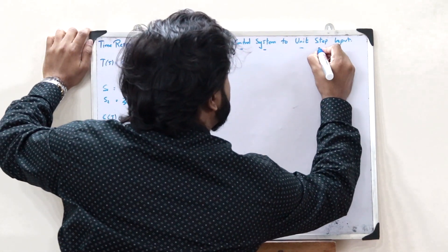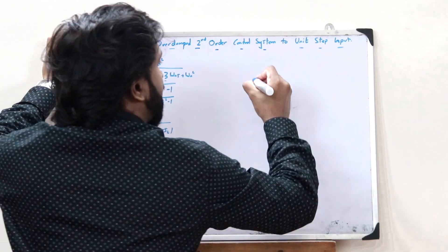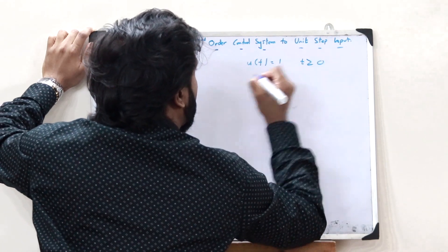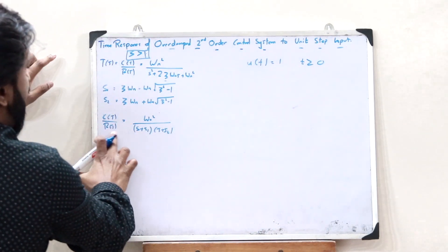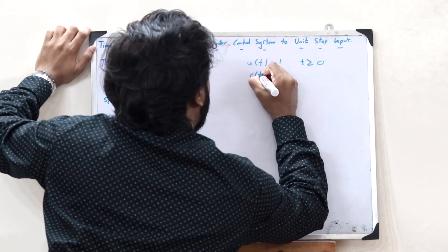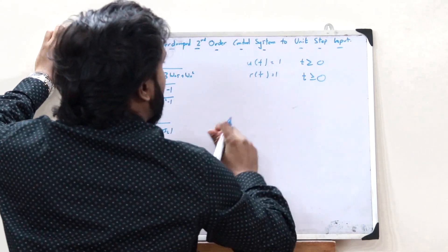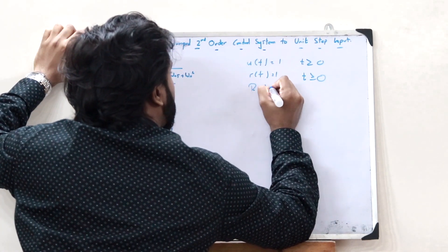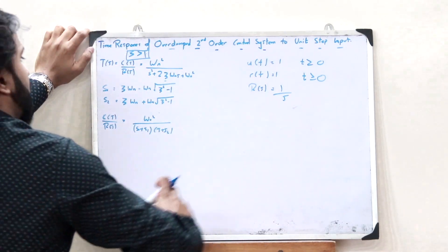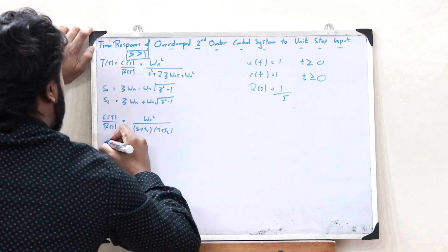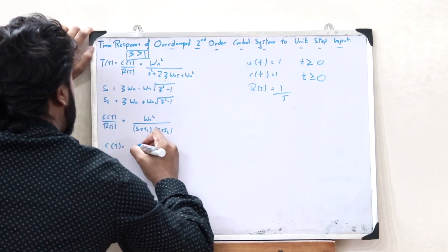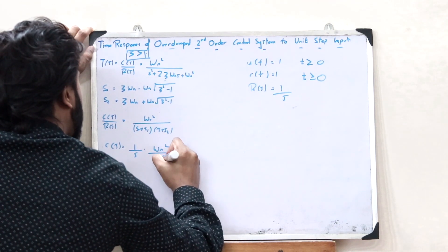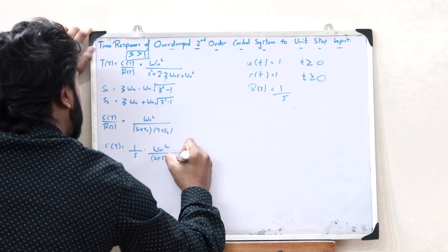Since we are given the unit step signal as input, we know that the unit step signal is U(t) = 1 for t ≥ 0. So R(t) = 1 for t ≥ 0. Taking the Laplace transform gives R(S) = 1/S. Therefore, substituting this R(S), we get C(S) = (1/S) × omega_N squared divided by (S + S1)(S + S2).